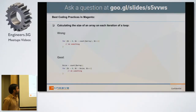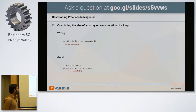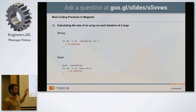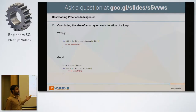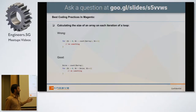The first issue is calculating the size of an array on each iteration of a loop. If we use count() inside a for statement, it recalculates every time the loop iterates. The good practice is to calculate the count once before the loop and then use a variable in the for-loop condition instead.